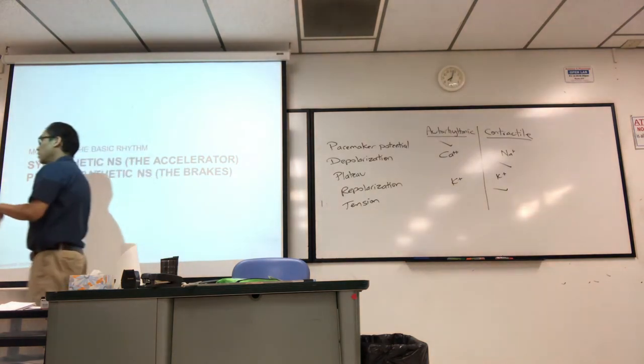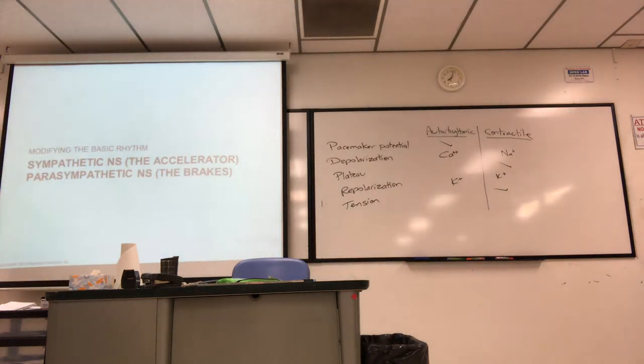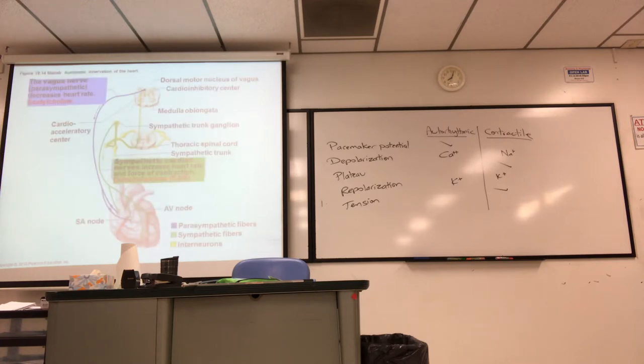Let's shift back to talking about the autorhythmic cells because they determine the heart rate, basic rhythm. We call it the sympathetic, the accelerator, and the parasympathetic nervous system, the brakes. Now, the heart beats intrinsically. The pacemaker happens all by itself, but you can influence it. You can speed it up or slow it down. Accelerator, brakes.